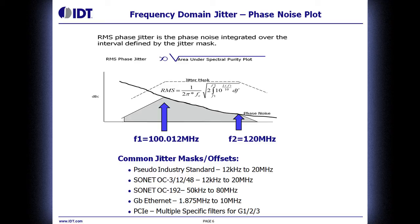Zooming in on that specific portion of the phase noise plot, here's an example of a frequency window that's 12 kilohertz to 20 megahertz offset from that 100 megahertz operating or carrier frequency. If you take this curve and integrate the area under it over the frequency range from f1 to f2 — from 100.012 megahertz up to 120 megahertz — the number that comes out of that integration is what we call the RMS phase jitter. We care about these specific windows because that's what drives high-speed communication systems. Whether it's SONET, Gigabit Ethernet, or PCI Express, you'll have a specific jitter mask and a specific window of noise. You integrate that range and the result is the RMS phase jitter.